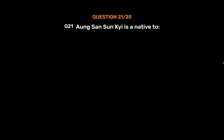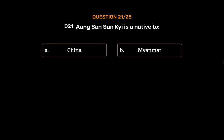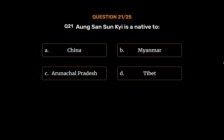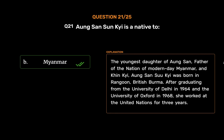Question No. 21. Aung San Suu Kyi is a native of: Option A. China. Option B. Myanmar. Option C. Arunachal Pradesh. Option D. Tibet. The correct answer is Option B, Myanmar. The youngest daughter of Aung San, father of the nation of modern-day Myanmar, and Khin Kyi, Aung San Suu Kyi was born in Rangoon, British Burma. After graduating from the University of Delhi in 1964 and the University of Oxford in 1968, she worked at the United Nations for three years.